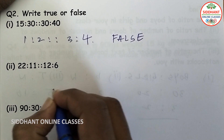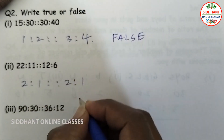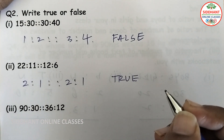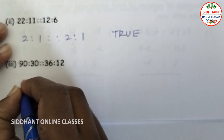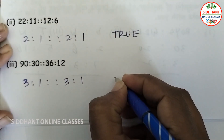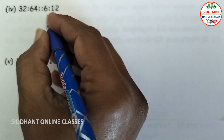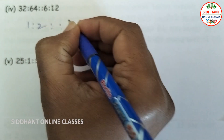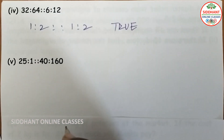Second proportion: 22 is to 11 and 12 is to 6. Simplifying, 22 to 11 gives 2 is to 1, and 12 to 6 also gives 2 is to 1. The ratios are the same, so the statement is true. Third proportion: 90 is to 30 and 36 is to 12. Dividing, both simplify to 3 is to 1, so the statement is true. Fourth proportion: 32 is to 64 and 6 is to 12. Both simplify to 1 is to 2, so the statement is true.